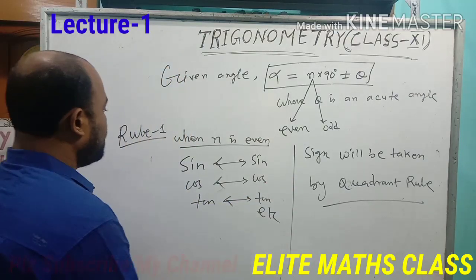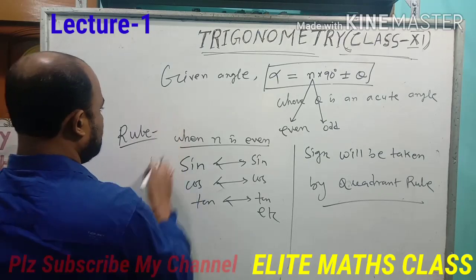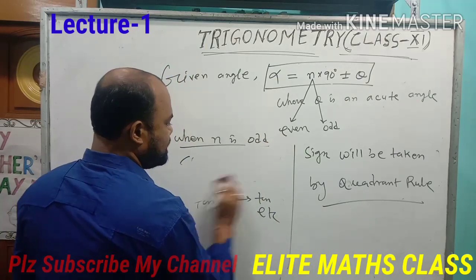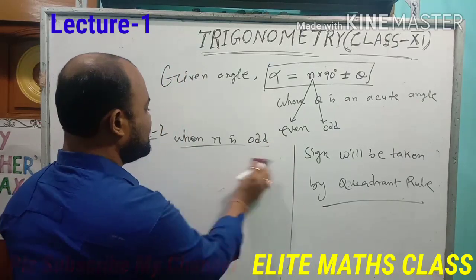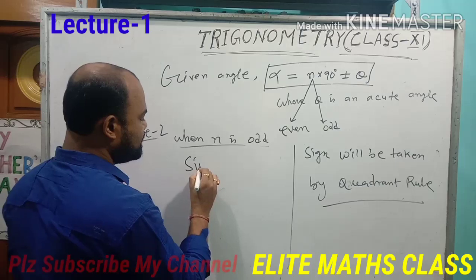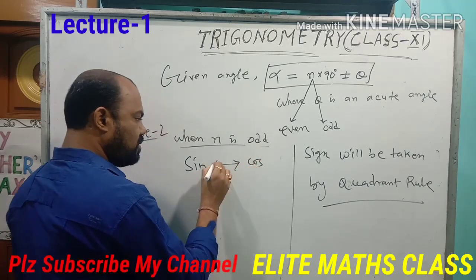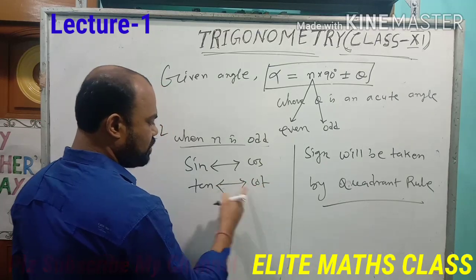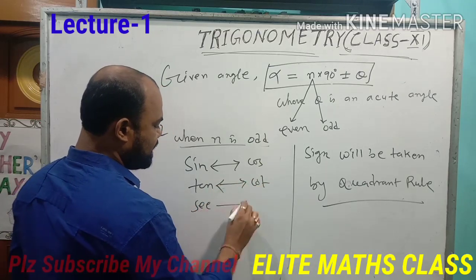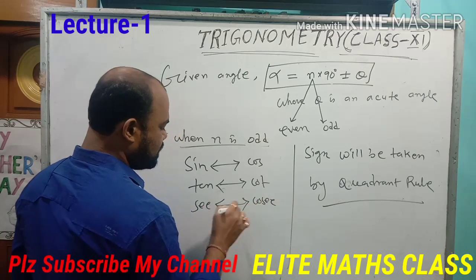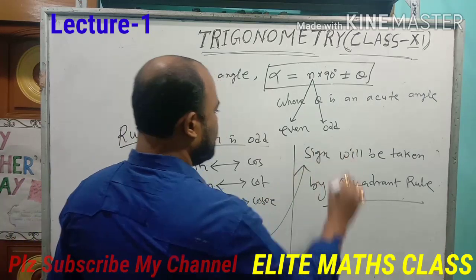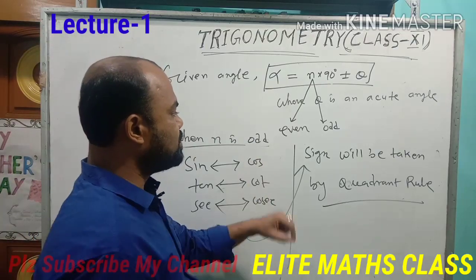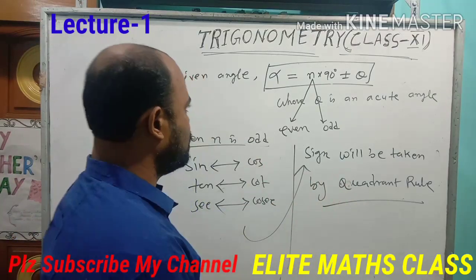And the second rule is: when N is odd, the trigonometrical ratios change. If sine is there, sine will become cos. If cos is there, cos will become sine. If tan is there, tan will become cot. Cot will become tan. And if sec is there, sec will become cosec and cosec will become sec. And the same thing — the final sign, whether positive or negative, will be taken according to the quadrant rule.